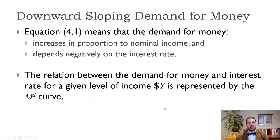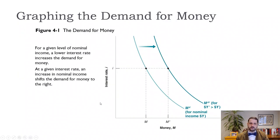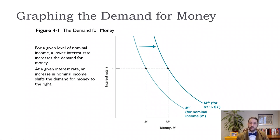We place the interest rate on the vertical axis and the quantity of money on the horizontal axis, giving us a downward-sloping money demand curve. If nominal income increases, the curve shifts to the right; if nominal income decreases, it shifts to the left. For any given interest rate, higher nominal GDP means demand for more money, and lower nominal GDP means demand for less money.